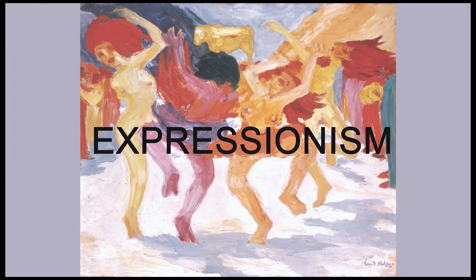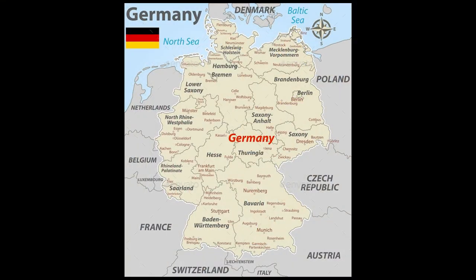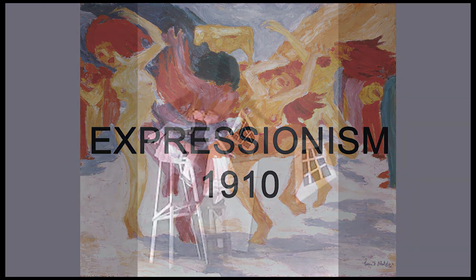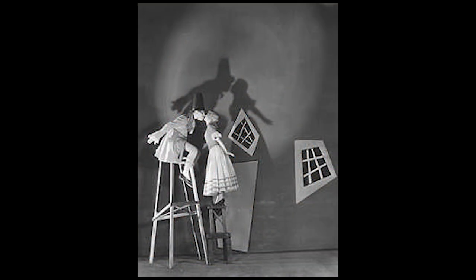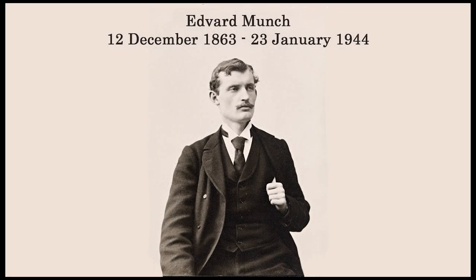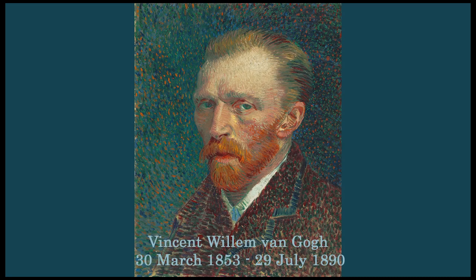The term Expressionism was first used in Germany in 1910 to describe the avant-garde art of the time. Expressionist art grew out of the work of symbolist artists such as Paul Gauguin, Edvard Munch, and Vincent van Gogh.